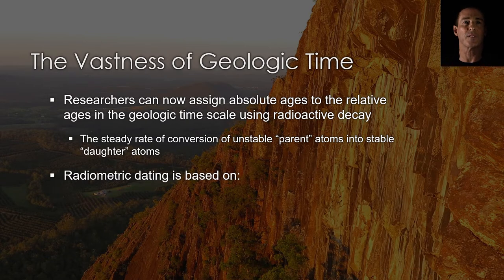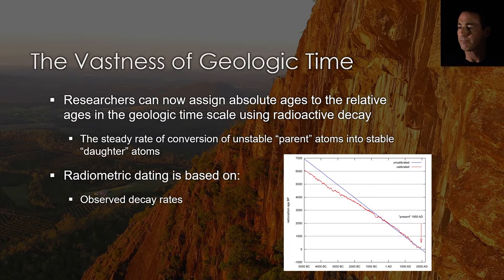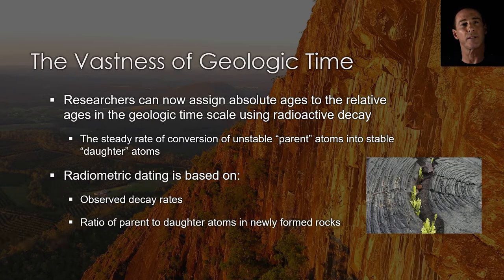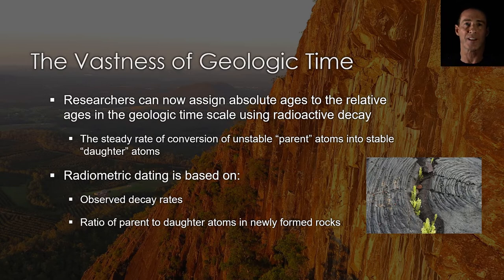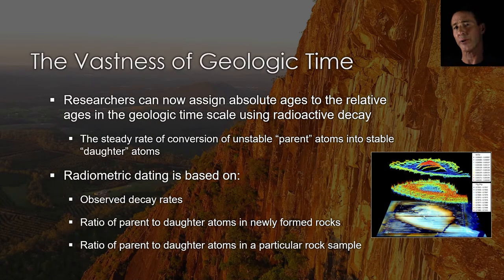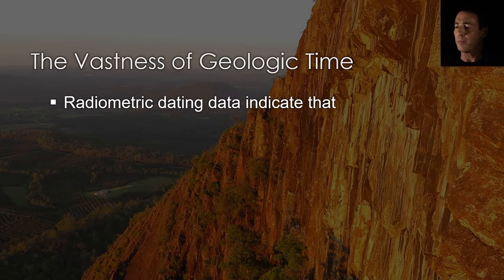Radiometric dating is based on three pieces of information. First, the observed decay rates of parent-to-daughter atoms. Second, the ratio of parent-to-daughter atoms present in newly formed rocks, such as the amount of uranium atoms versus lead atoms in molten rock when it cools. Third, the ratio of parent-to-daughter atoms present in a particular rock sample. Combining information from these two ratios with information on the decay rate allows researchers to estimate when a rock formed.